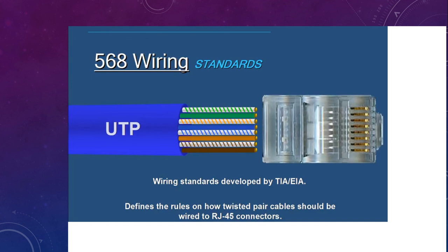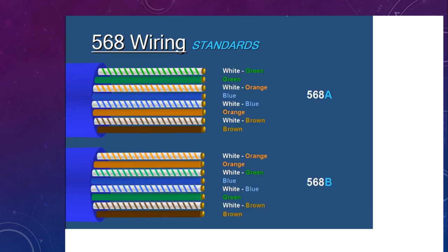There are wiring standards developed by TIA and EIA. These standards define the rules on how twisted pair cable should be wired to RJ45 connectors. Whenever we connect the same kind of device to device, we use a crossover cable, and when connecting different kinds of devices — for example, a computer to a switch — we use a straight-through cable. Wiring standards are of two kinds: 568A and 568B.